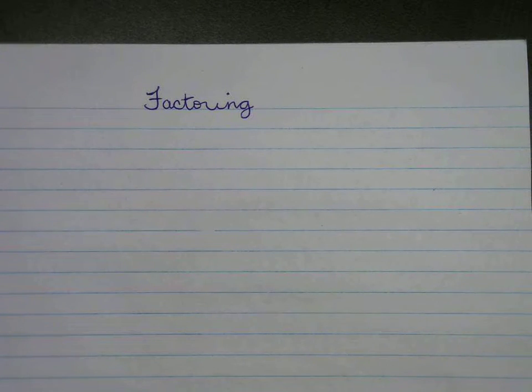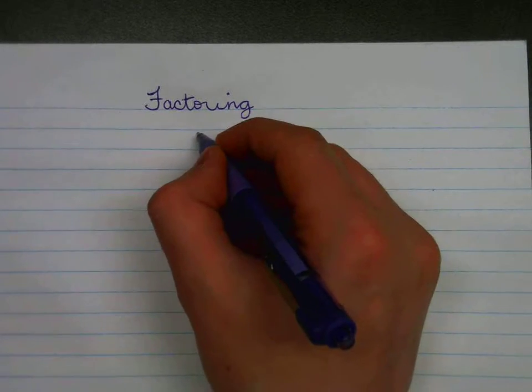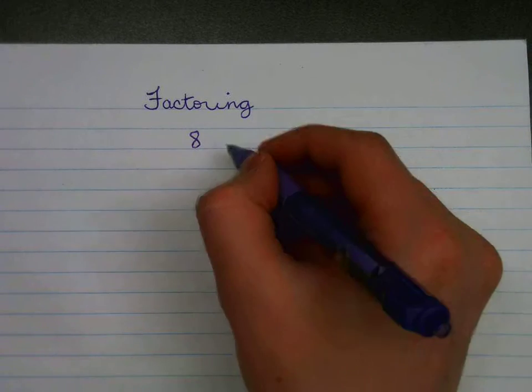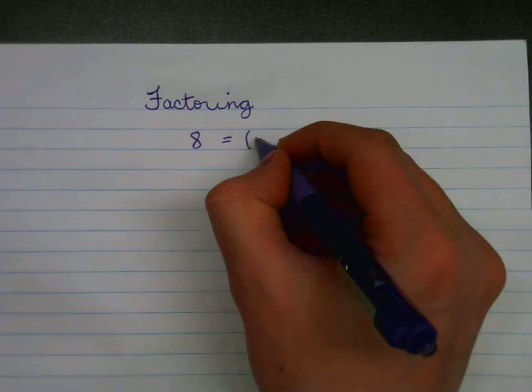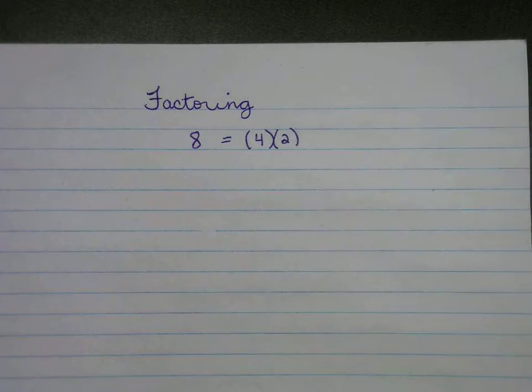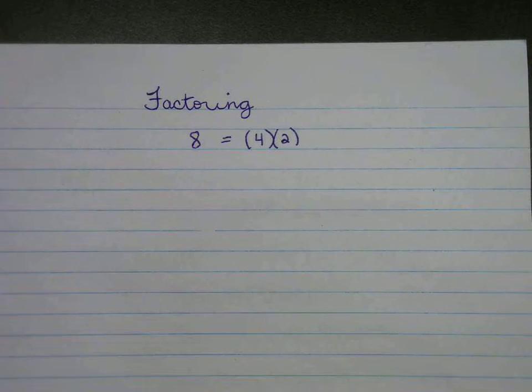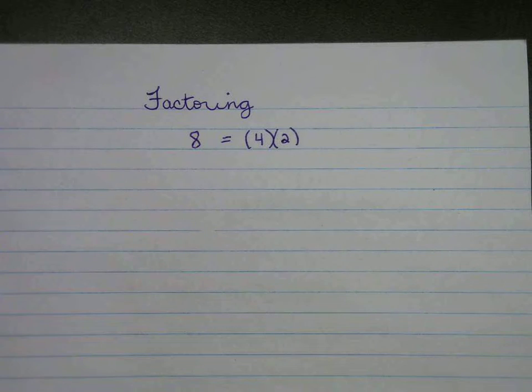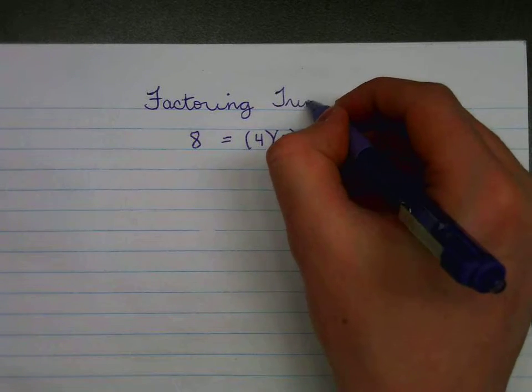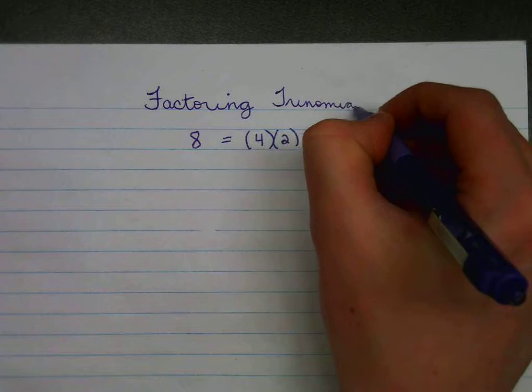Today we're talking about factoring. Factoring is the process of taking a term or an expression like 8 and turning it into a product, something like 4 times 2. This is essentially factoring, creating factors. Today we're talking more about factoring trinomials, where we have an expression using algebra, using variables.